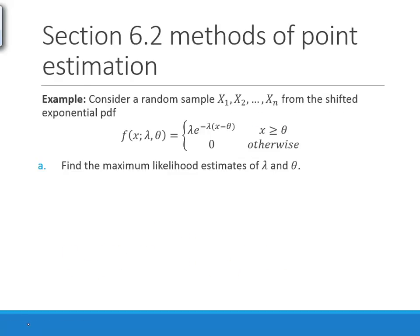Indicator functions will be especially helpful when the range of the random sample's distribution depends on the parameter — that is, when the support of the PDF is determined by theta.